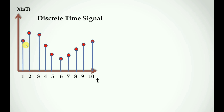So this is a discrete time signal represented as x(nT). Why does x(nT) represent this? We have an analog signal x(t), which is a continuous signal — in brackets we have t for continuous time. The discrete time signal uses n into T in brackets, where T is a fixed time interval. This represents the discrete time signal sampled from the continuous time signal.